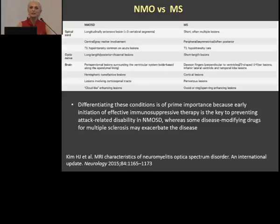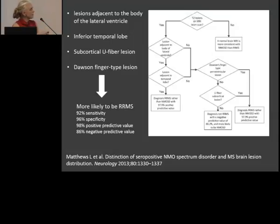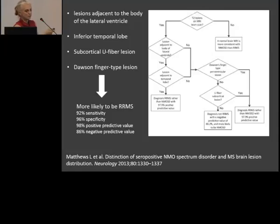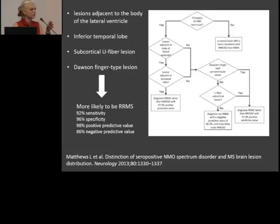For example, you cannot give natalizumab to patients with NMO because it aggravates their disease. There are four imaging features that point more toward multiple sclerosis than NMO: lesions close to the body of the lateral ventricle, lesions in the inferior temporal lobe, subcortical U-fiber lesions, and Dawson's fingers-type lesions. I think you will have this lecture online so you can see the literature.